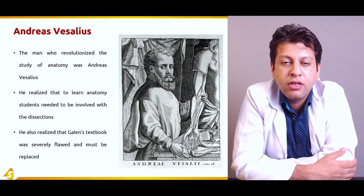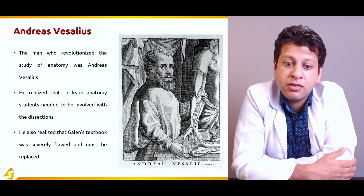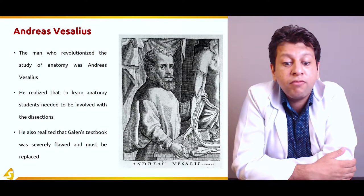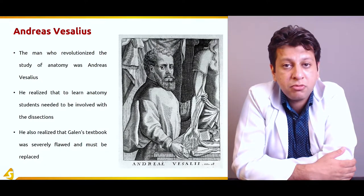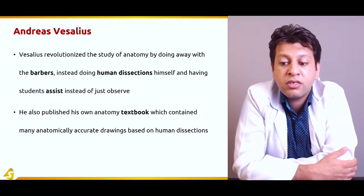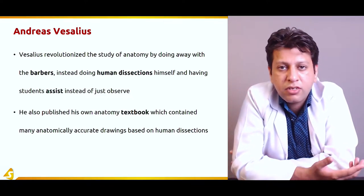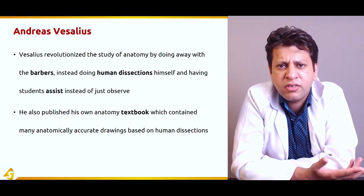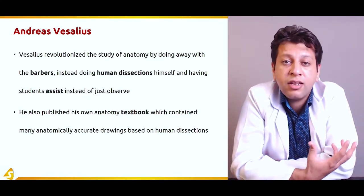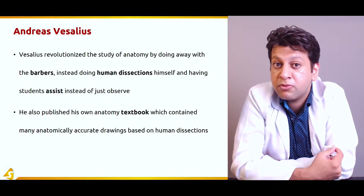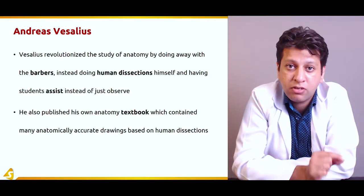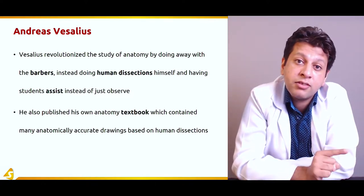Andreas Vesalius is called the father of modern anatomy. He realized that to learn anatomy, students need to be involved with dissection. He also realized that Galen's text was severely flawed and must be replaced. Vesalius revolutionized the study of anatomy by doing away with barbers performing dissection and instead doing human dissection himself, having students assist rather than just observe. This is the basis of modern anatomy today — in medical schools, first-year students are made to perform dissection themselves to understand anatomy.